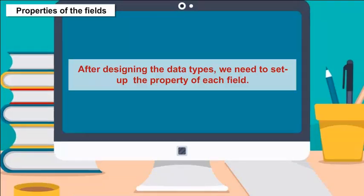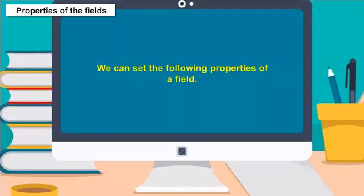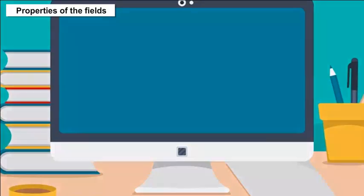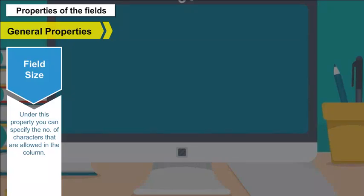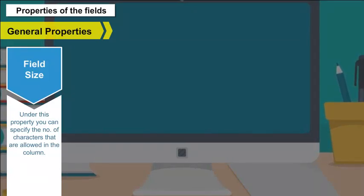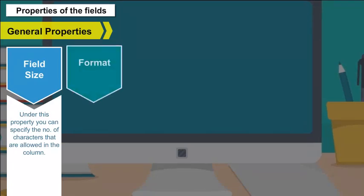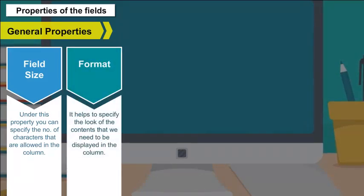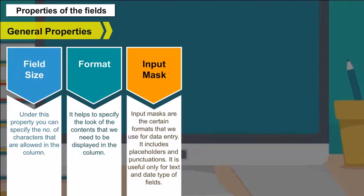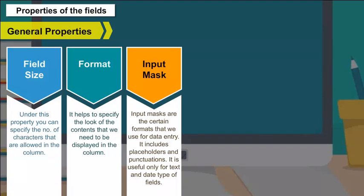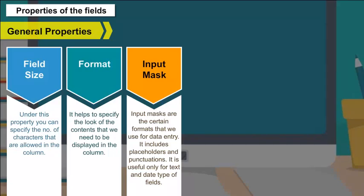Properties of the fields: After designing the data types, we need to set up the property of each field. General Properties — Field Size: You can specify the number of characters allowed in the column. Format: It helps to specify the look of the contents to be displayed in the column. Input Mask: Input masks are certain formats used for data entry. They include placeholders and punctuation, and are useful only for text and date type fields.